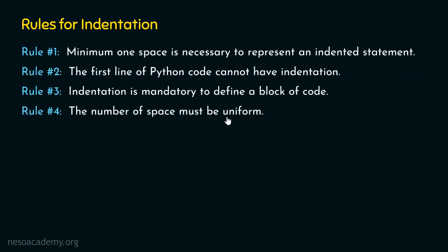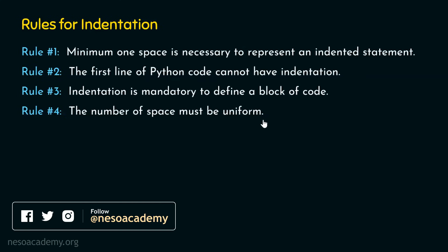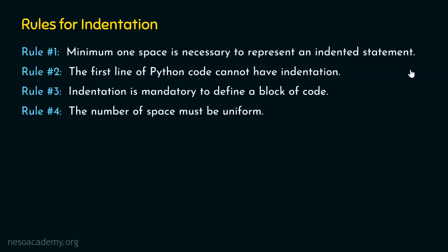Rule four: the number of spaces must be uniform. If you use one space to represent an indented statement, you need to follow that consistently. Whether it's one space, three spaces, four spaces, or a tab — it is up to you, but it must be uniform throughout. You don't have to worry about indentation too much though, because in Visual Studio Code, indentation is added automatically. When you write an if statement and press enter, VS Code automatically adds the indentation for you.